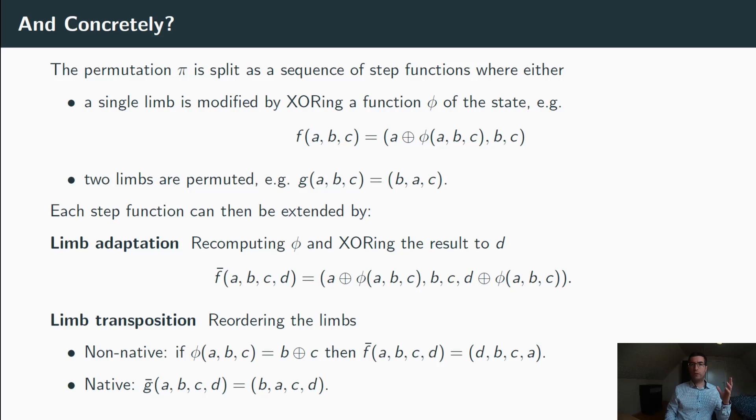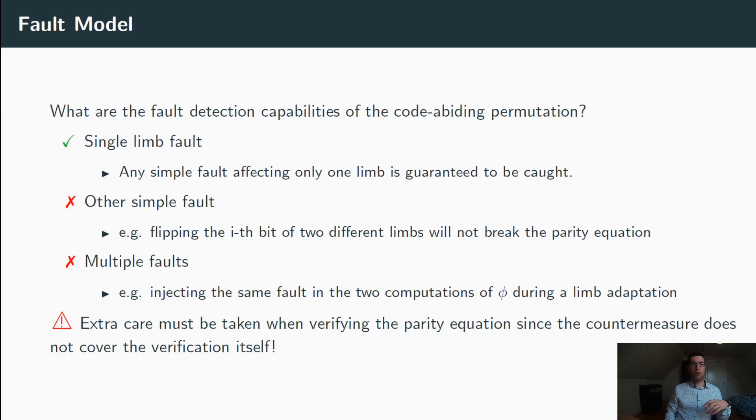Besides non-native limb transposition, we also have a native limb transposition, which is based on the observation that swapping two limbs does not affect the parity of the state. In such case, the parity limb D does not need to be adapted.